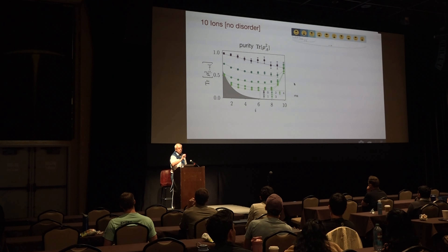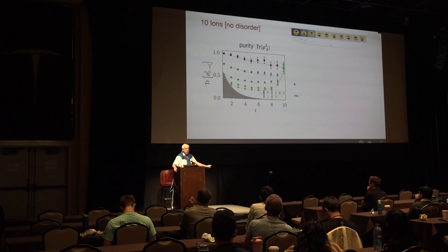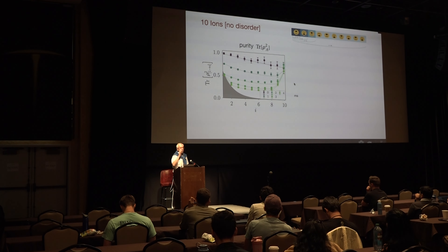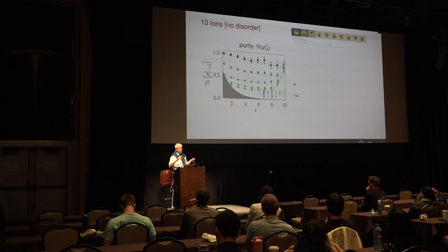So SPAM error is actually a key concern about computing purity. This is a more historical experiment — in the meantime they are much better. It turned out they got some wrong random unitaries in there in the early days, and many things are now done much better than what you can see here.